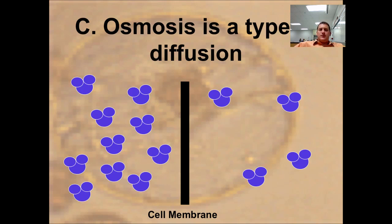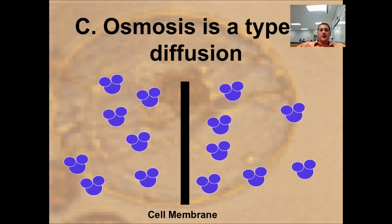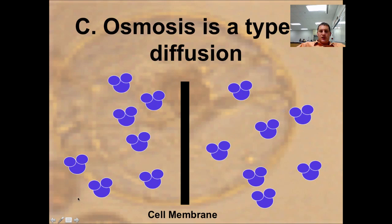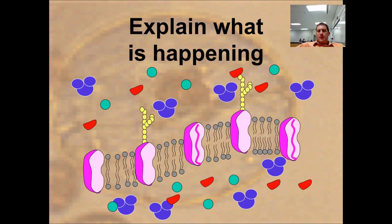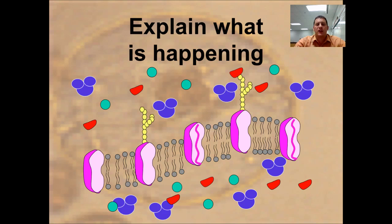Osmosis is a different type of diffusion — it is diffusion, but simply of water. Osmosis is the movement of water from high concentration to low concentration; we're now talking about the solvent, what does the dissolving. All three functions — osmosis, diffusion, and facilitated diffusion — happen at the exact same time inside your cells, nonstop, trying to maintain that constant state of equilibrium.